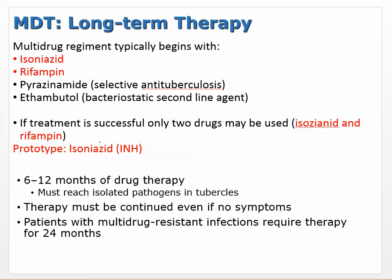For long-term therapy, it's usually 6 to 12 months of drug therapy. It must reach all the isolated pathogens in the tubercles to cure this. Therapy must be continued even if there are no symptoms, so compliance can be a problem — patients may get tired of taking the drugs or forget. Patients with multi-drug resistant infections may require therapy for up to 24 months.